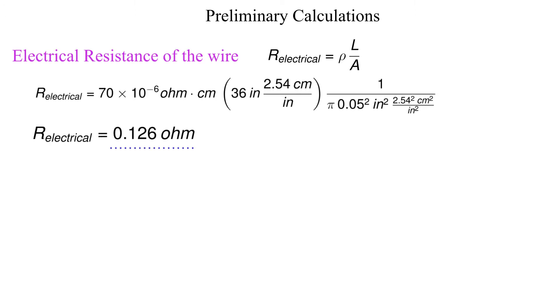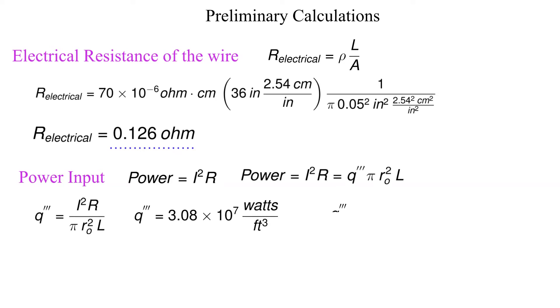Next let's calculate the heat generated by the current or I squared R losses. This will be a uniform volumetric heat source. The volumetric heat source is 1.051 times 10 to the 8th BTUs per hour foot cubed.